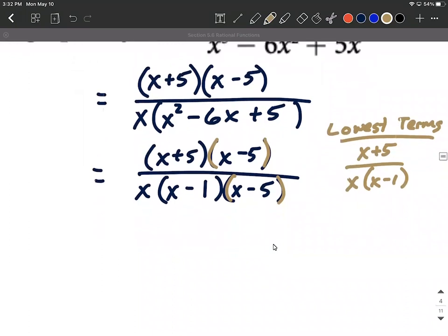So next, let's finish this up by identifying any removable discontinuities where that's a hole in the graph and any vertical asymptotes.